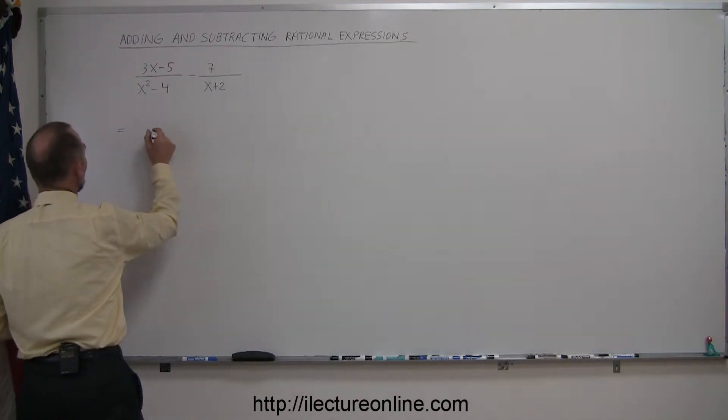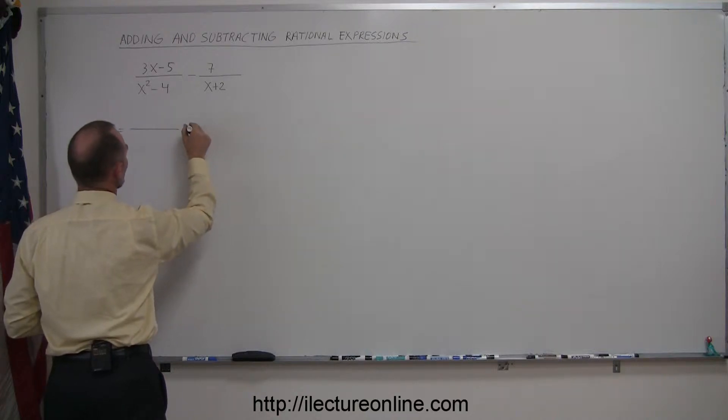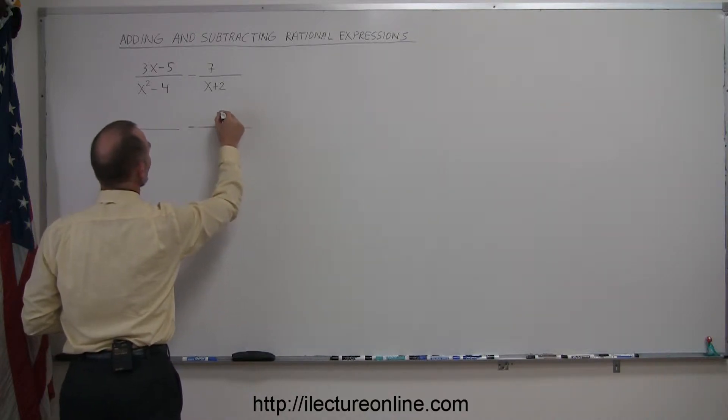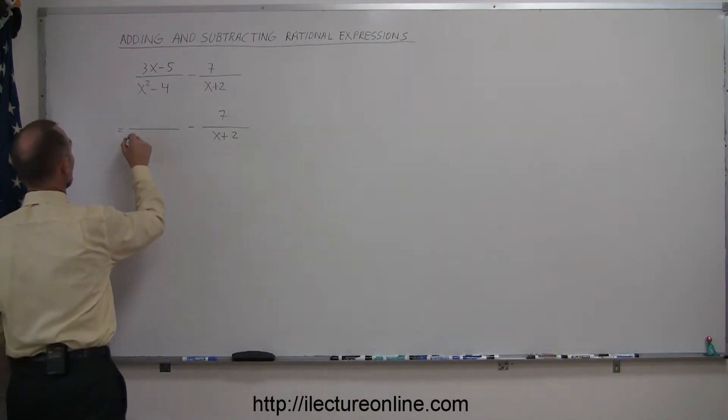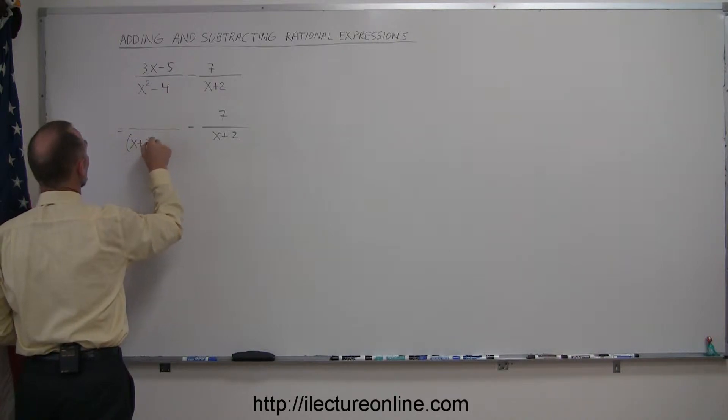Let's rewrite these two fractions and factor the denominator of the first fraction. This becomes minus 7 over x plus 2, but here we realize this is the difference of squares, and the difference of squares factors as x plus 2 times x minus 2. The numerator is still 3x minus 5.